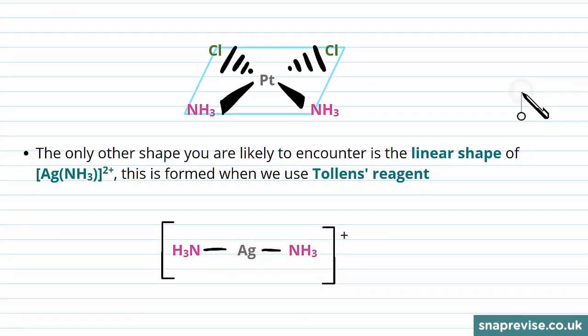The only other shape that you're likely to encounter is the linear shape of silver with two ammonia ions as ligands. This is formed when we use Tollens' reagent, and you can see here it just has a straight line shape and a positive charge.